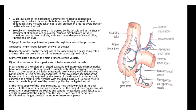In carcinoma of the colon, the related paracolic and intermediate lymph nodes must be removed, which is possible only after ligature of the main branch of the superior or inferior mesenteric artery. It is necessary therefore to remove a larger segment of bowel than is actually required by the extent of disease. To avoid gangrene from interference with blood supply, it is always wise to remove the whole portion of bowel supplied by the ligated vessels.